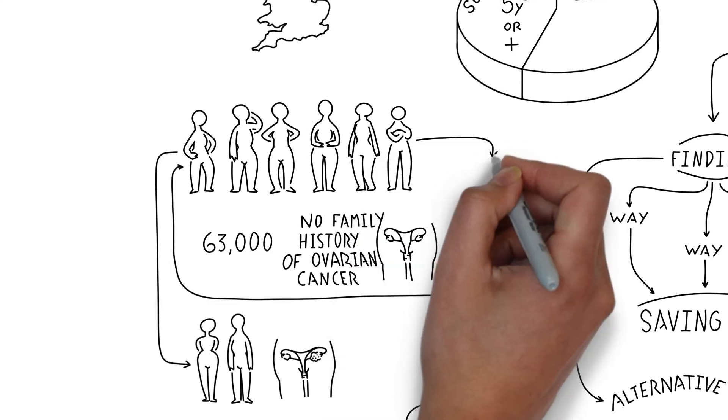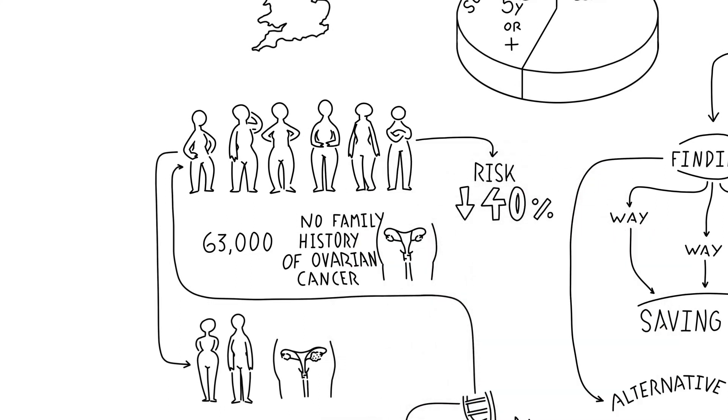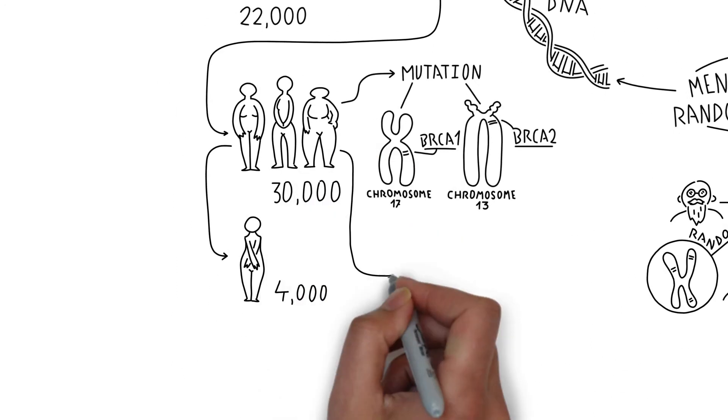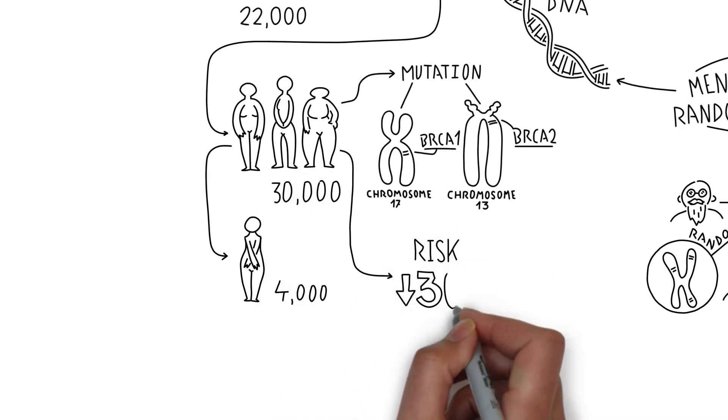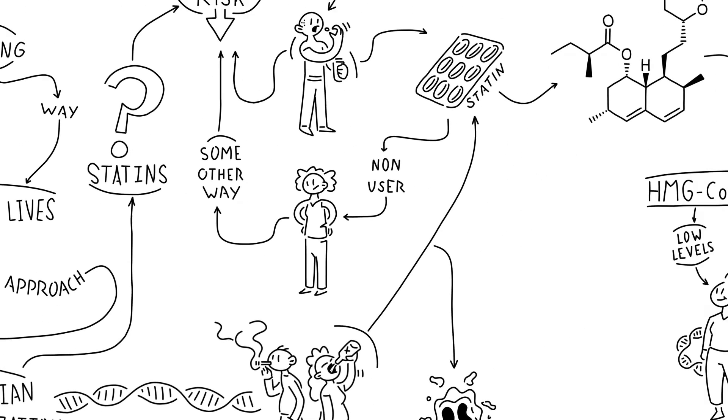For the women with no family history of ovarian cancer, the risk was reduced by around 40%. And for women with BRCA1 or BRCA2 mutations, the risk was reduced by around 30%.